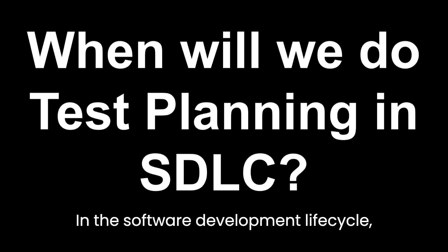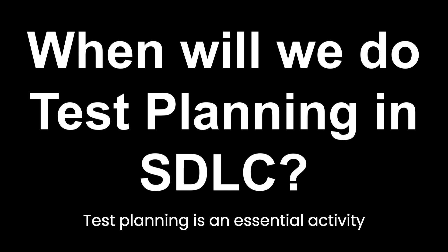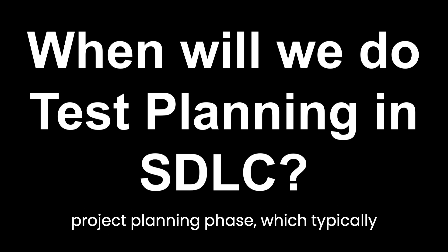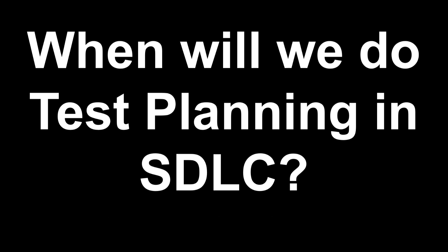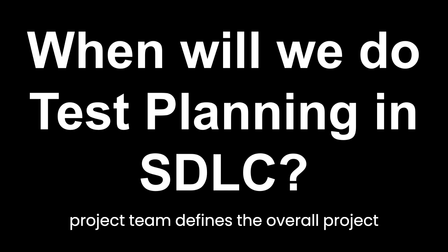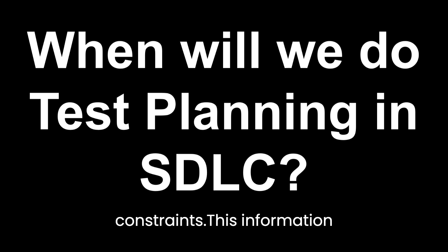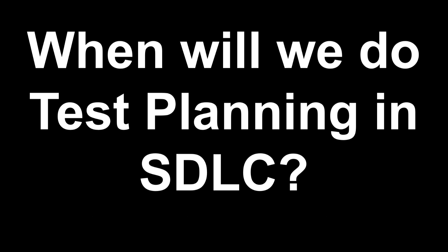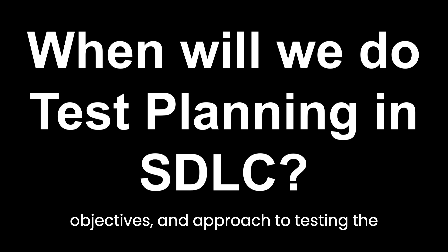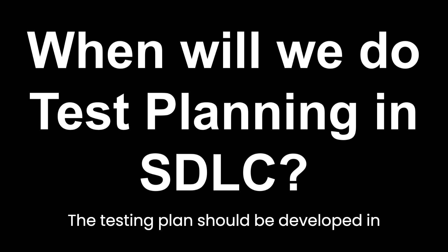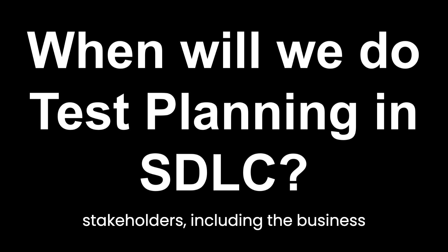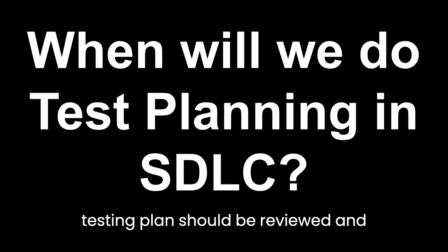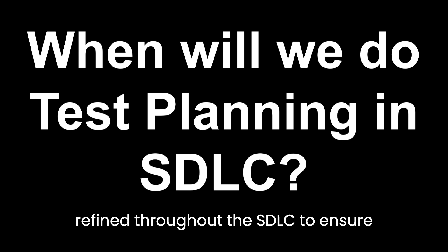In the software development life cycle, when will we do test planning? Test planning is an essential activity in the SDLC and should be done as part of the project planning phase, which typically occurs in the early stages. During the project planning phase, the project team defines the overall project scope, objectives, requirements, and constraints. This information is used to develop the project plan, which includes the testing plan. The testing plan should be developed in collaboration with all relevant stakeholders, including business analysts, developers, the testing team, and the project manager, and should be reviewed and refined throughout the SDLC.